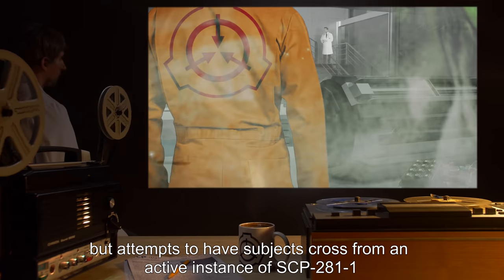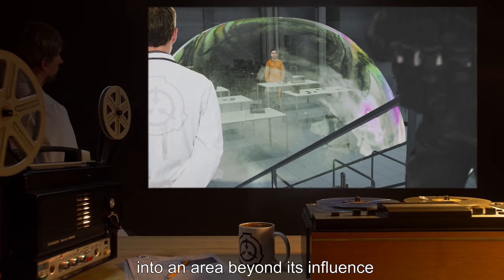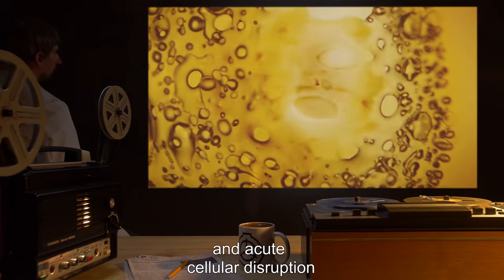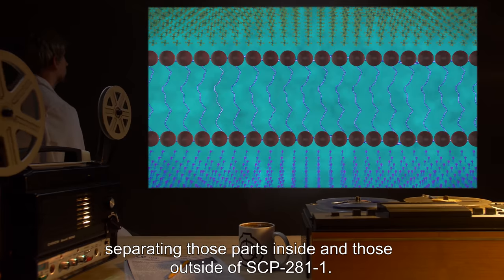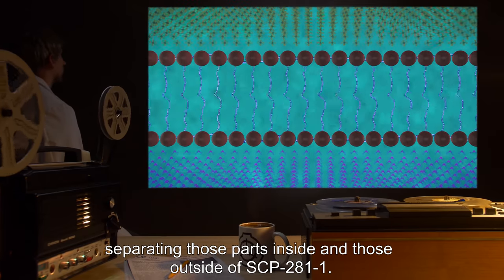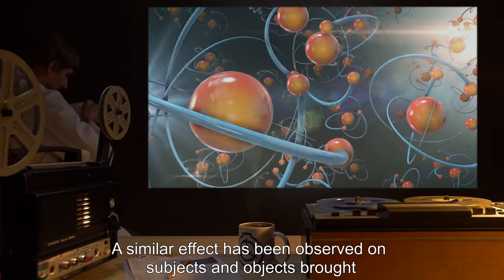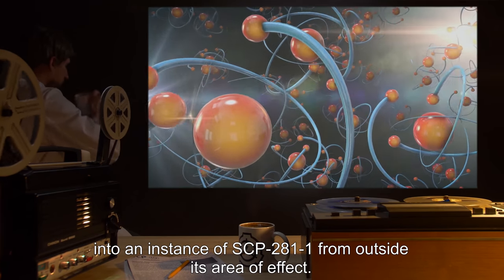Subjects within SCP-281-1 can move around within its limits, but attempts to have subjects cross from an active instance of SCP-281-1 into an area beyond its influence have invariably resulted in subjects undergoing massive and acute cellular disruption along the line separating those parts inside and those outside of SCP-281-1. A similar effect has been observed on subjects and objects brought into an instance of SCP-281-1 from outside its area of effect.